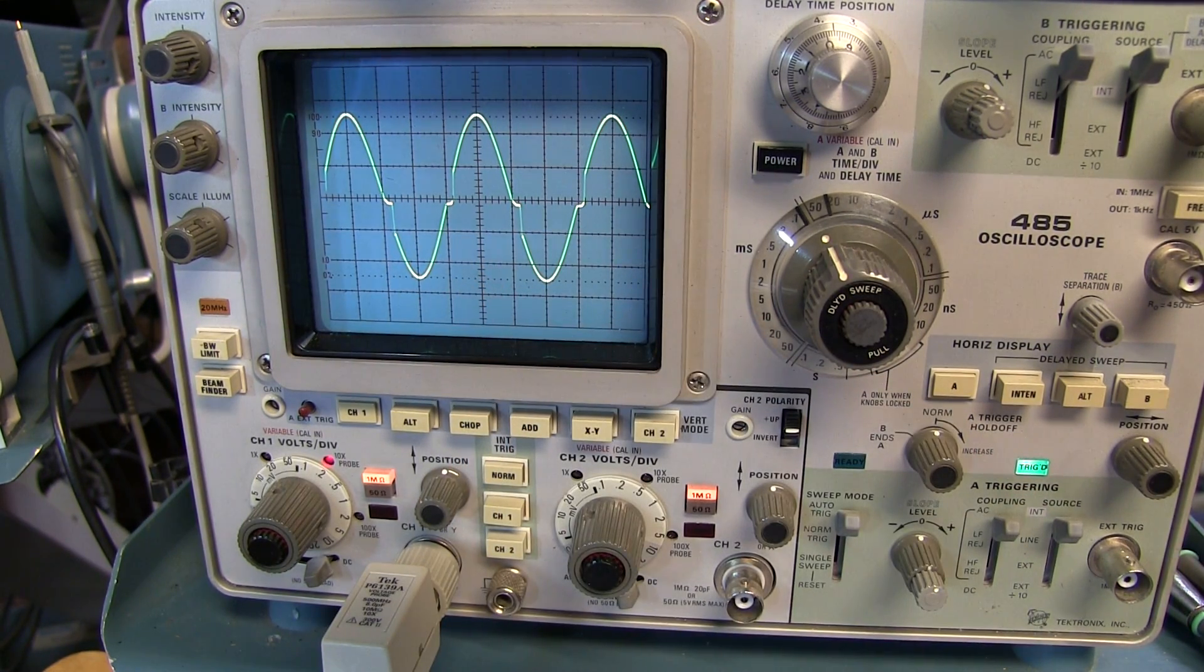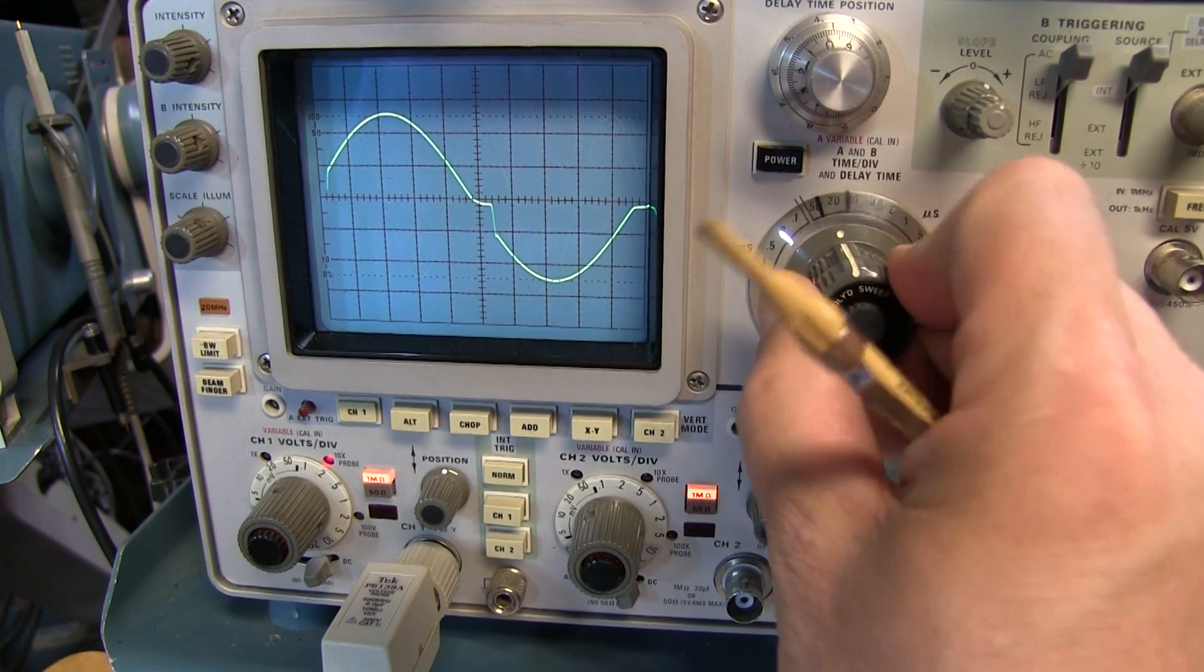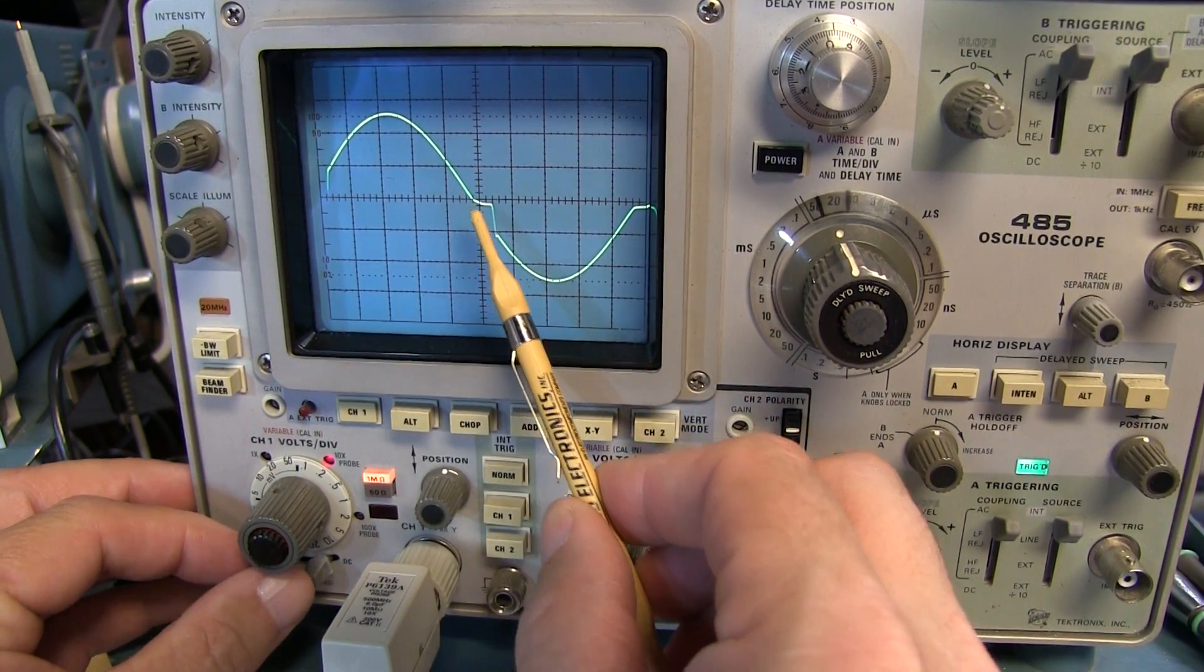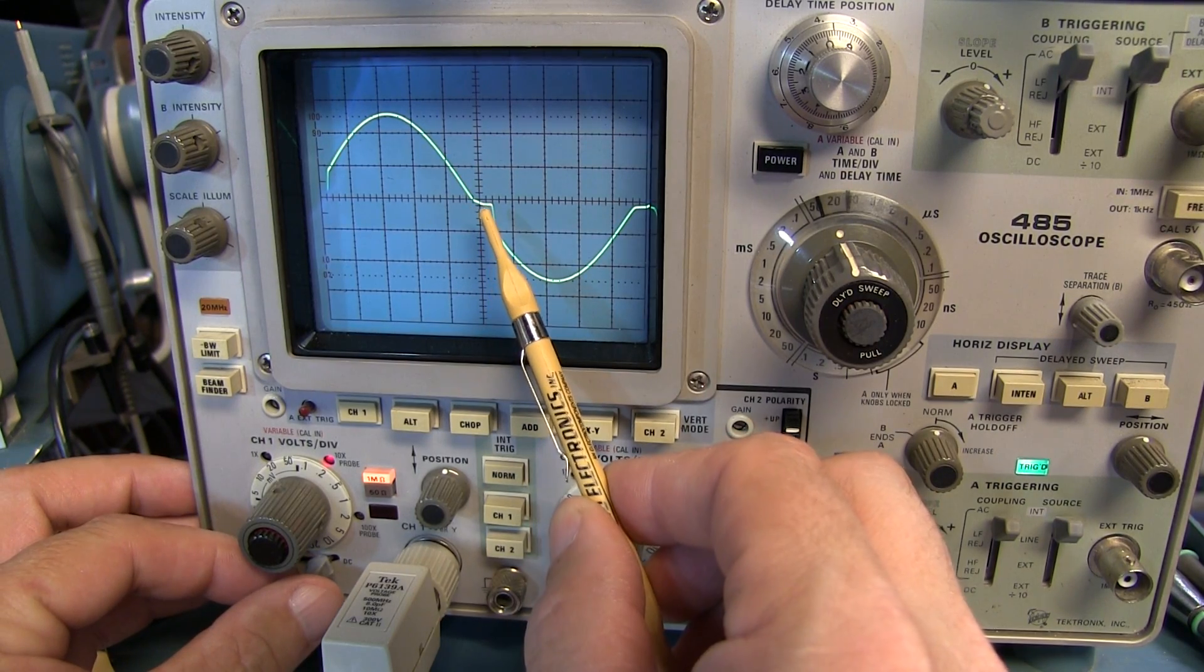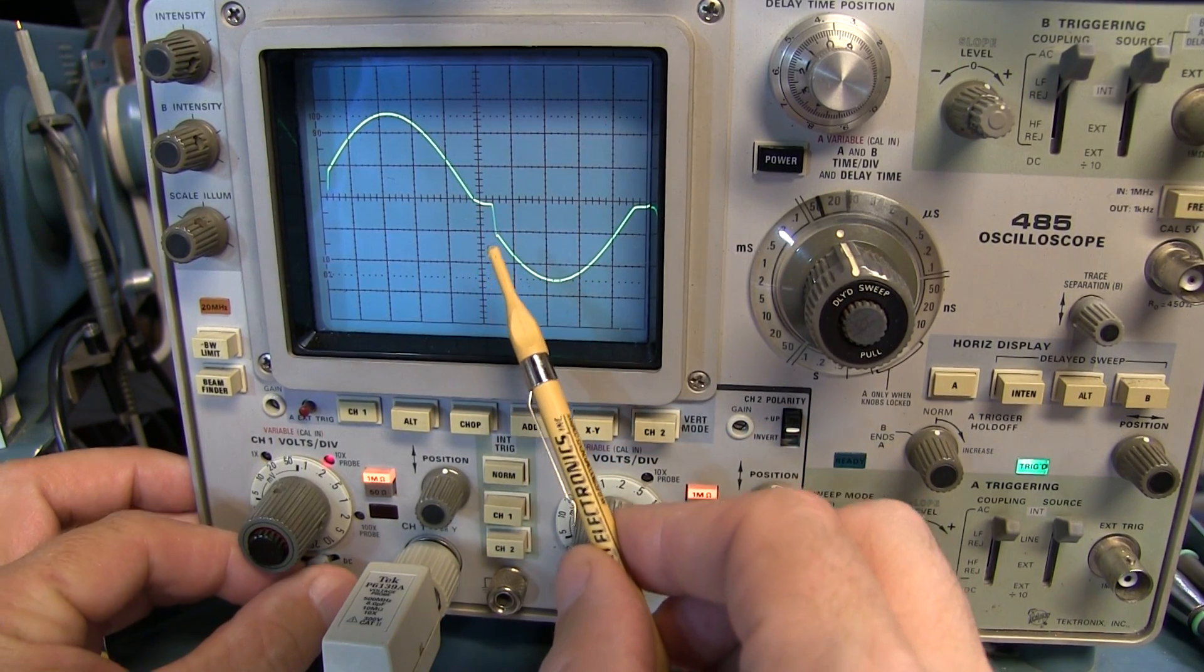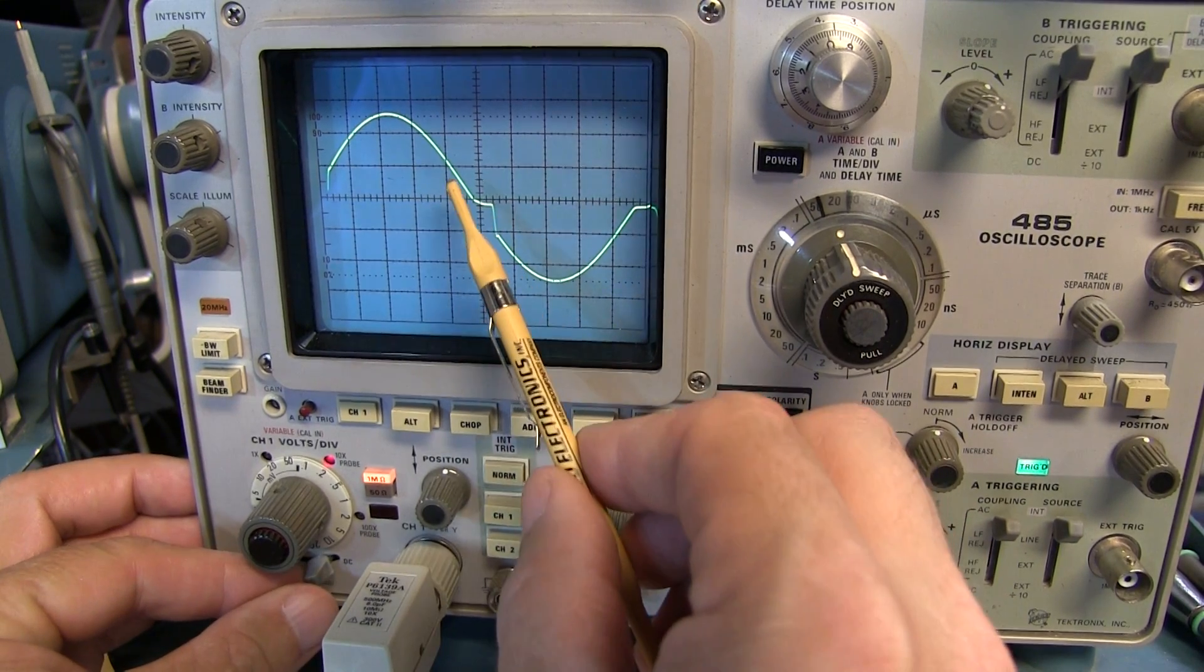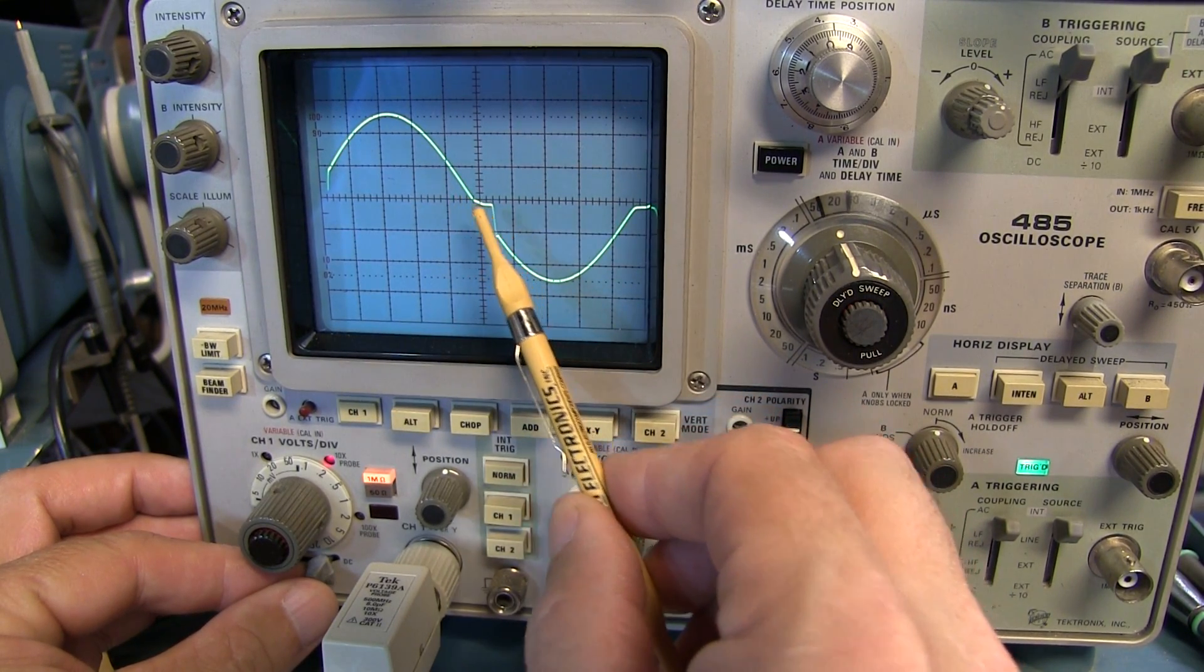One interesting thing is if you look carefully, you'll notice that flattening out of the waveform where those upper NPN transistors turn off is occurring just below ground. In fact, if I switch back to ground, I can see ground is right at the center reticle. And this is actually going just a little bit below that.